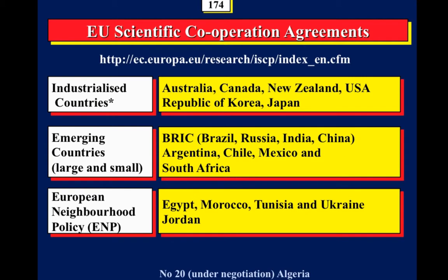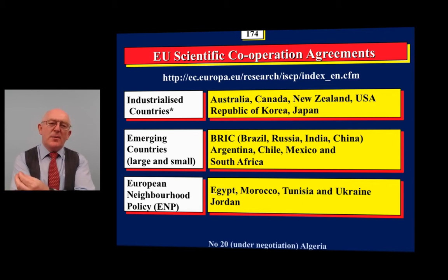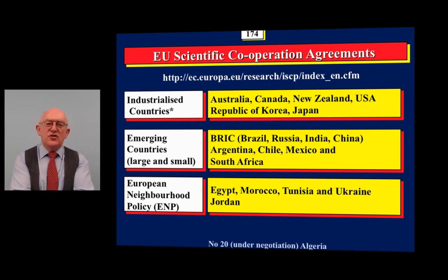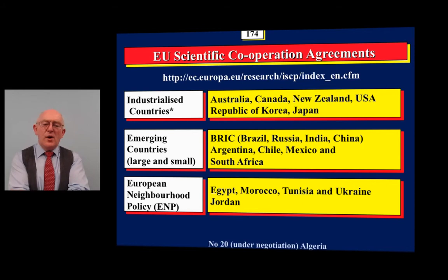What about countries like America, Australia, and Canada? Before describing their status, you must be aware that the European Union has signed scientific cooperation agreements with 19 countries — including Australia and the USA. In these areas, Europe likes to have joint research on things like security, climate change, and human rights. So if you're doing a project involving any of these countries, it's a good idea to check the scientific cooperation agreement shown at the top of this slide.